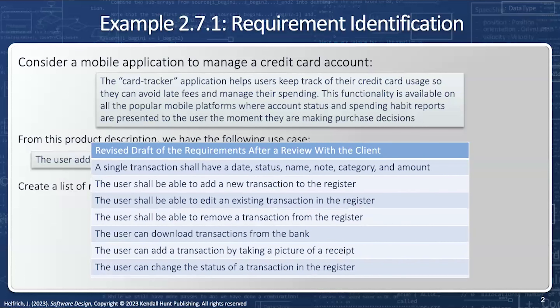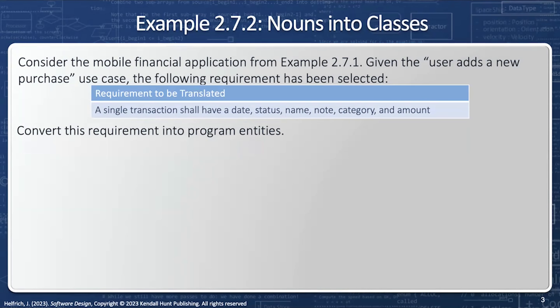So we have the requirements we had before, plus: the user can download transactions from the bank; the user can add a transaction by taking a picture of a receipt; and the user can change the status of a register. These are more elaborate versions of what we had before, which the client can only answer after they have seen us flush out the requirements in more detail. Consider the mobile financial application from our earlier example, and given the 'user adds a new purchase' use case, the following requirement has been selected.